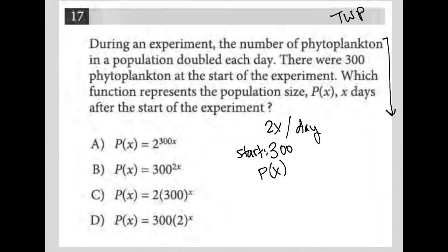x days after the start of the experiment. Okay, so then we want those 300 phytoplankton to become 600 phytoplankton after just one day. So x equals one.